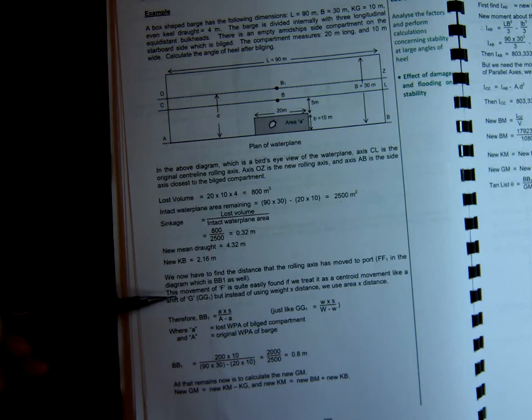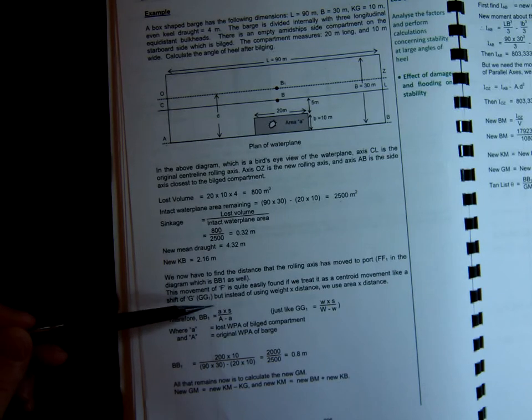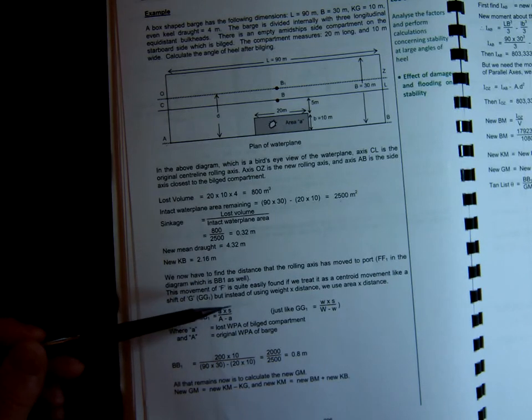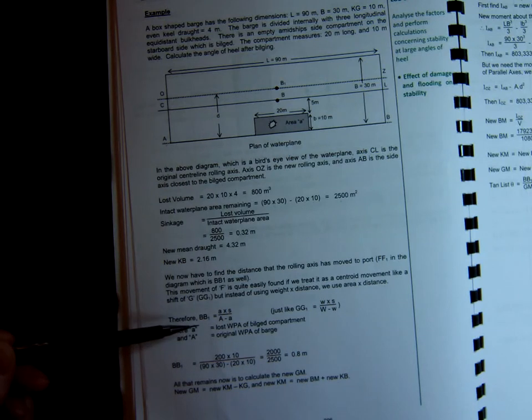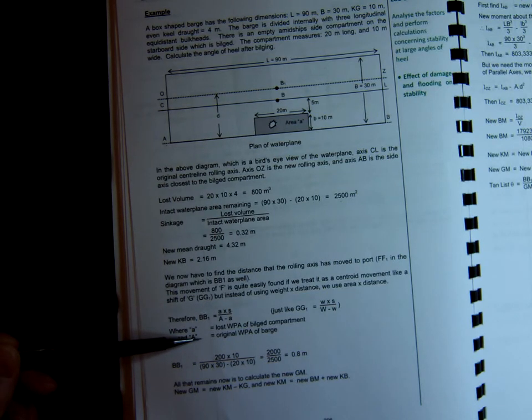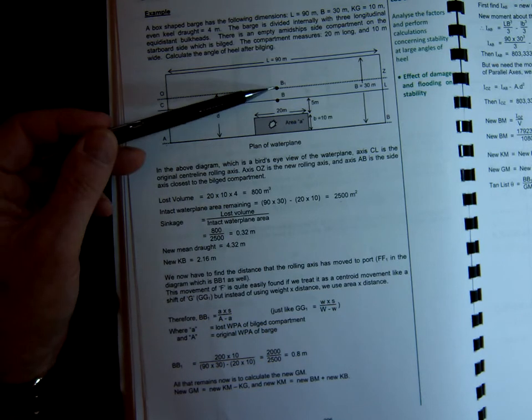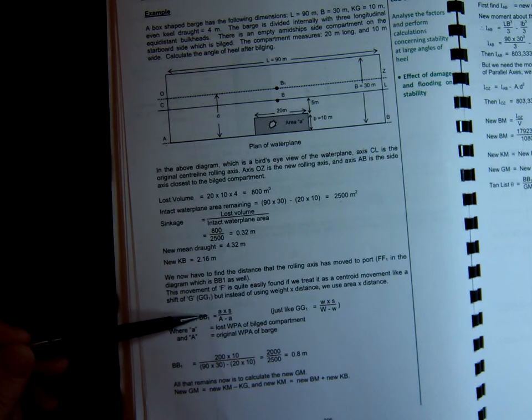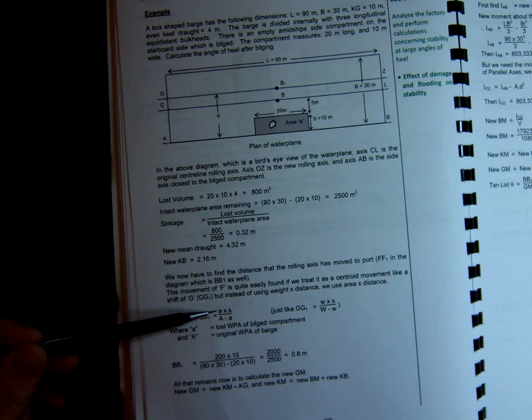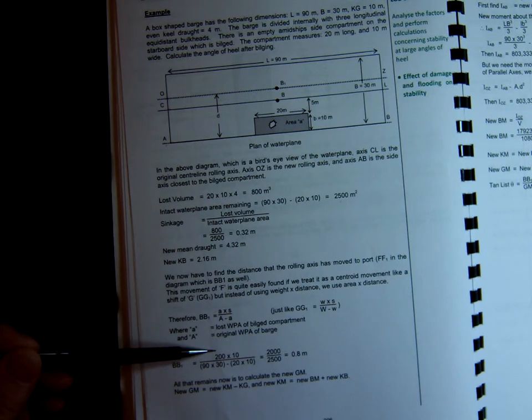And the movement is found if we treat it a bit like a centroid movement, a shift of G. And instead of using a weight times a distance, when we're working out listing moments, we have a weight of a cargo times its distance from the centerline, which gives a listing moment. So let's have a look at how we do it here. We can say that the area A here is the lost water plane area of the bilge compartment, and A is the original water plane area of the barge. And that will represent B to B1.